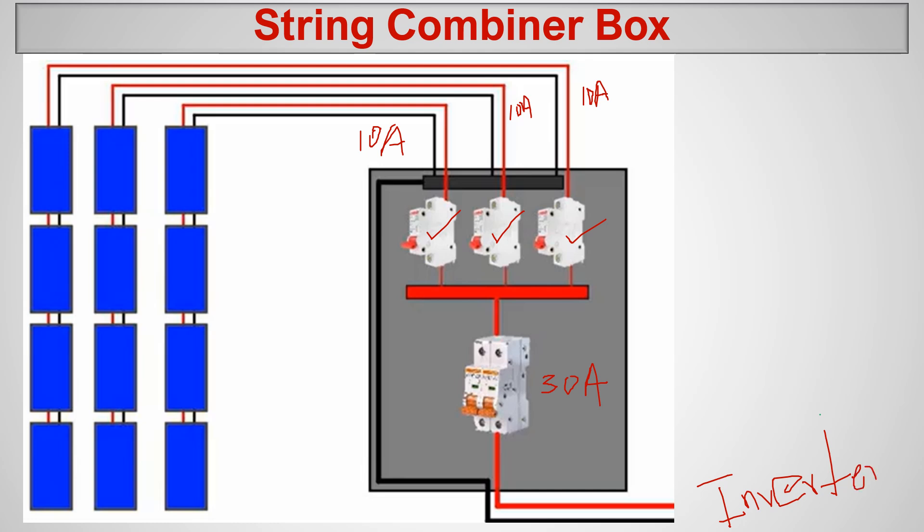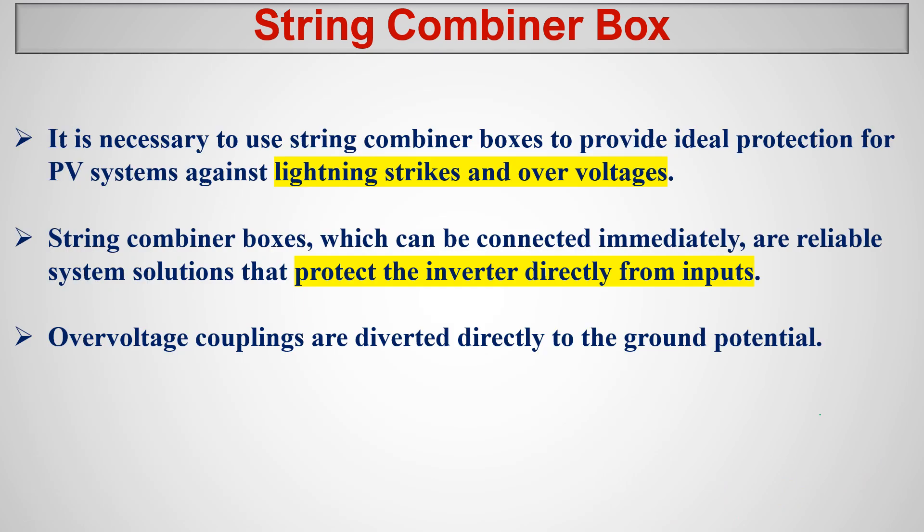This is how the system works. Basically, inside the combiner box we combine the three strings together while also having a safety system — the circuit breakers. The primary function is combining, and the second function is installing protection devices inside the combiner box. In some installations they separate the circuit breakers into another box, but in most cases both are combined together in the string combiner box.